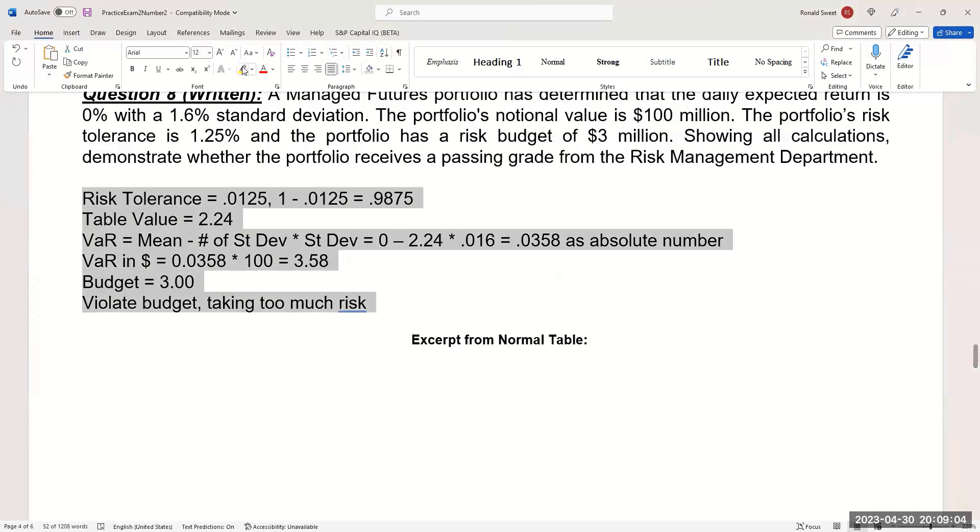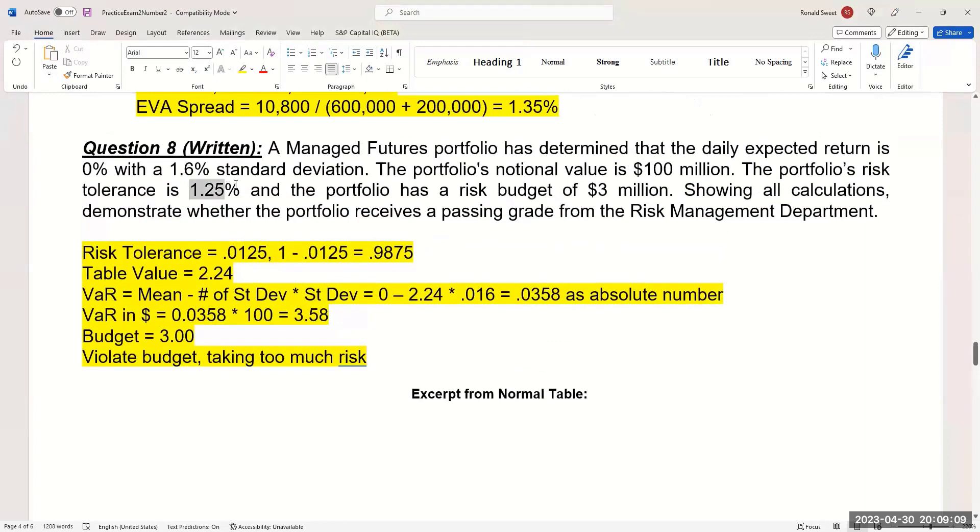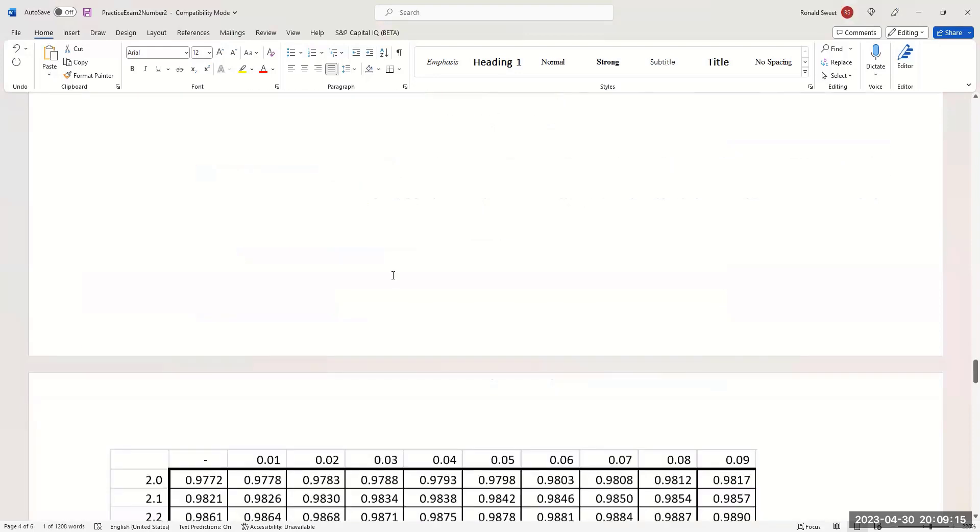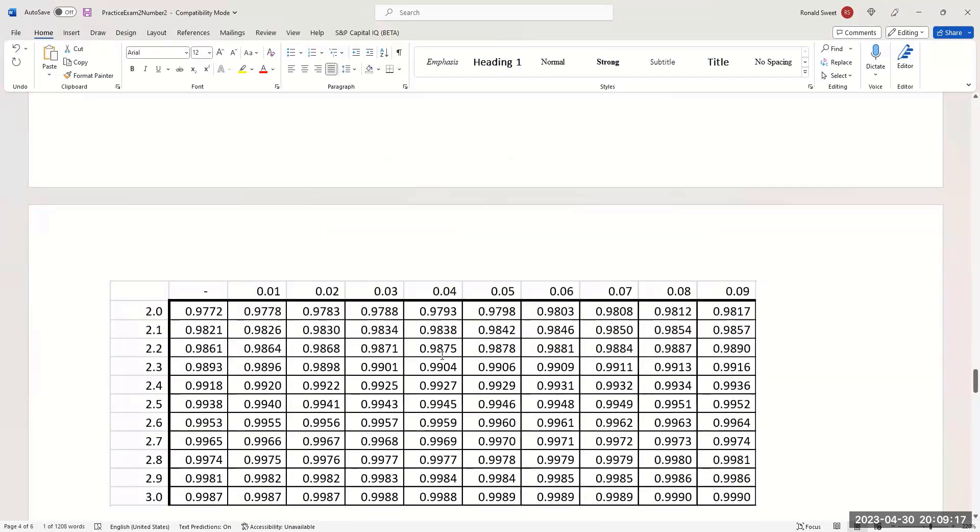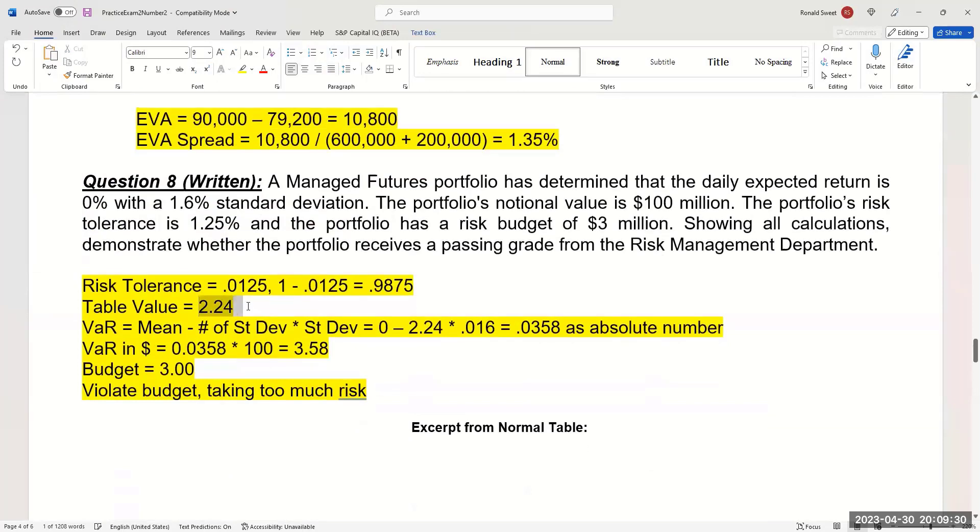Can I see how you got the table value again? Yeah, so their risk tolerance is 1.25. You take one minus that, you get 0.9875. You got to find that in the table, 0.9875. There it is right there. So you look at row value 2.2, column value 0.04, you add those together, 2.24. And that becomes the number of deviations.